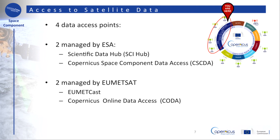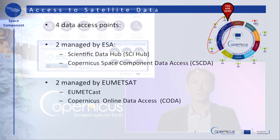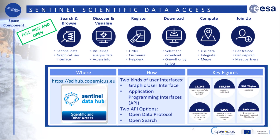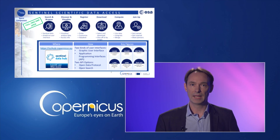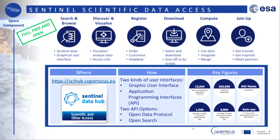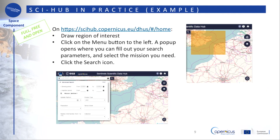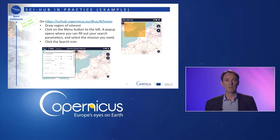Of the four access points dedicated to satellite data, two are managed by the European Space Agency while the two others are handled by EUMETSAT. The first one managed by ESA is the Sentinel Scientific Data Hub. It is full, free and open for anybody and gives access to Sentinel 1, 2 and 3 through a graphical user interface which is user-friendly. More than 1,050 new products are published every day. You can even search, browse, discover and visualize the data without any registration. Registration is only needed when you want to download the data. In the graphical user interface of the Scientific Data Hub, you can define an area and a period of interest, specify a Sentinel mission and any parameter related to the satellite imagery. The search results show the metadata of the image and the thumbnail when available. The images can be downloaded directly, limited to two images at the same time.